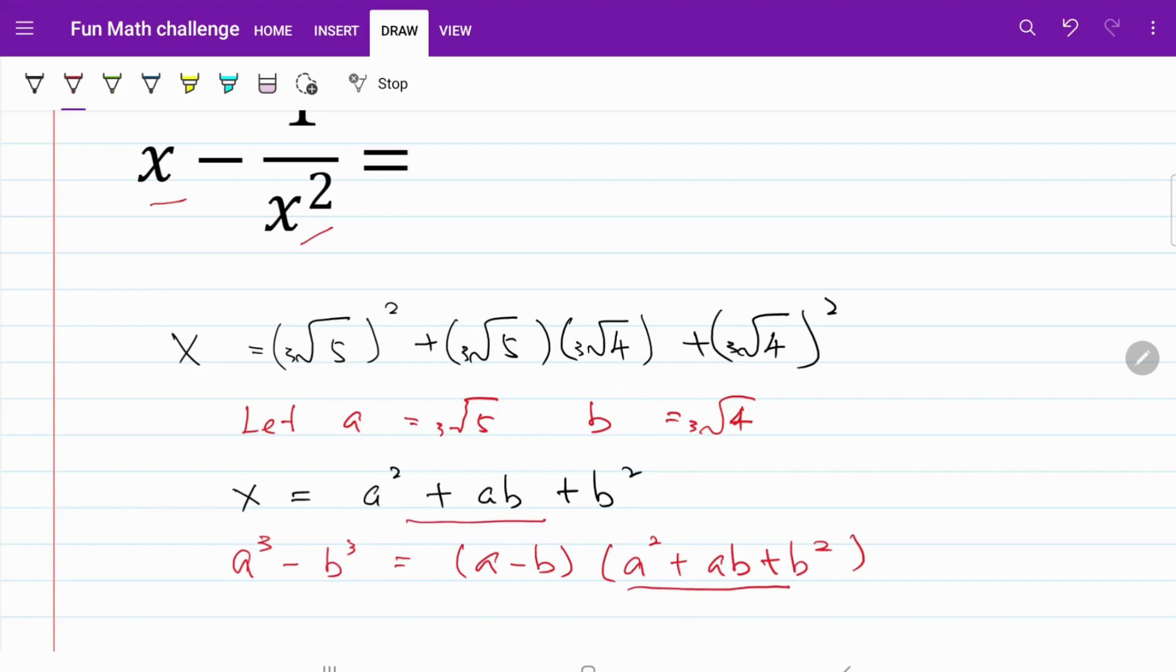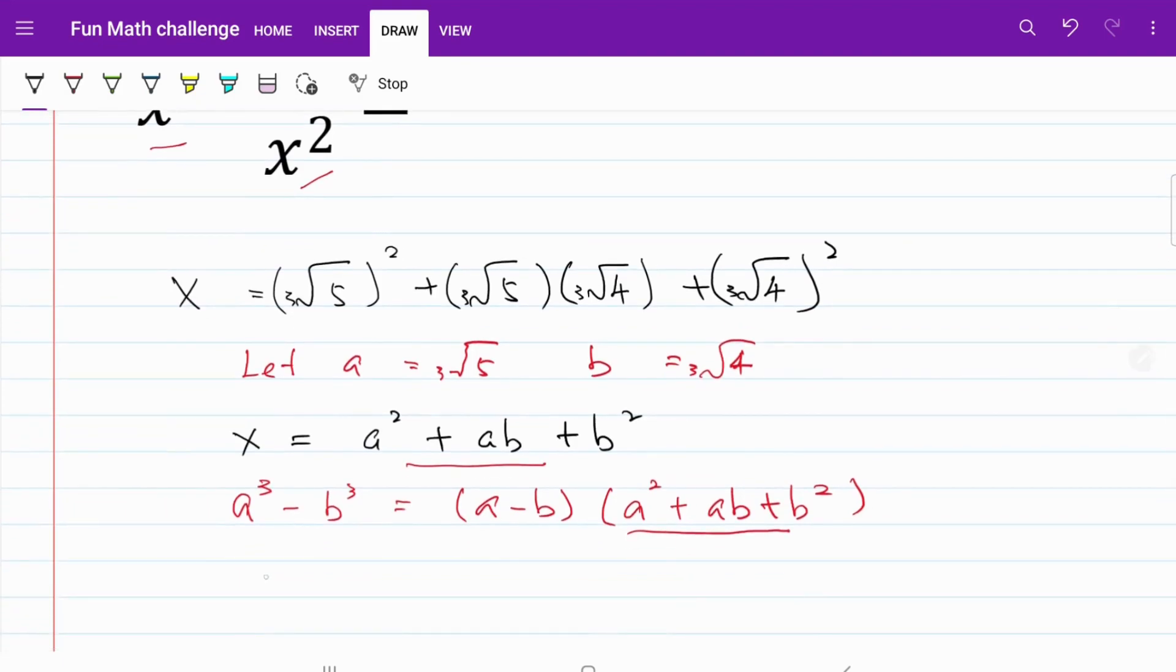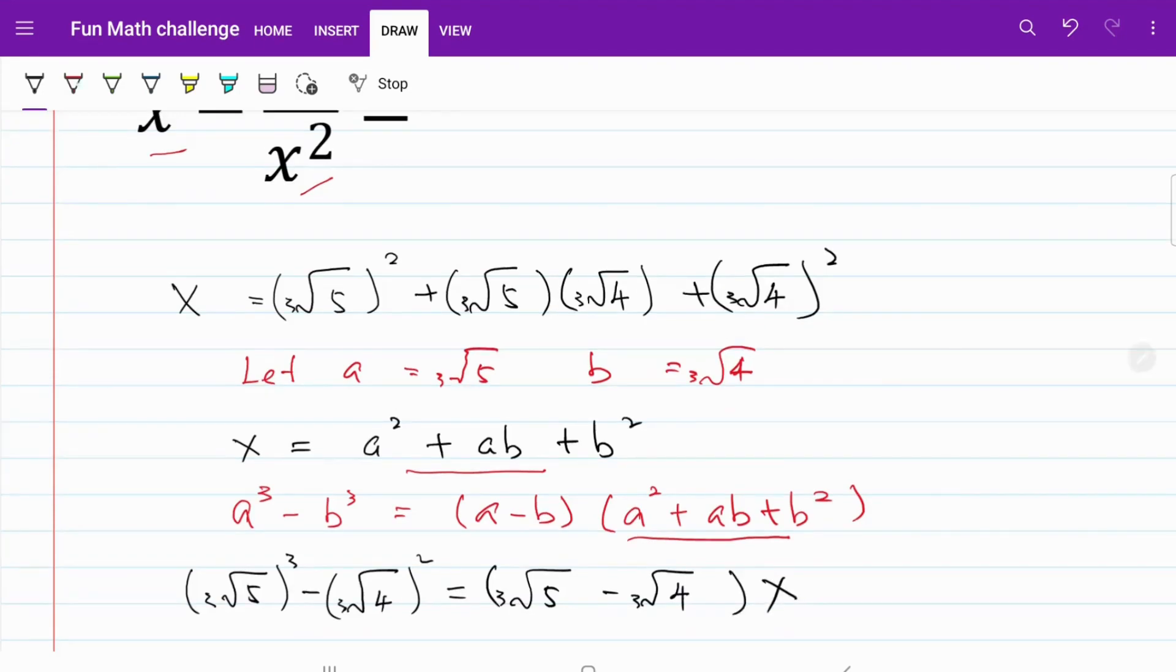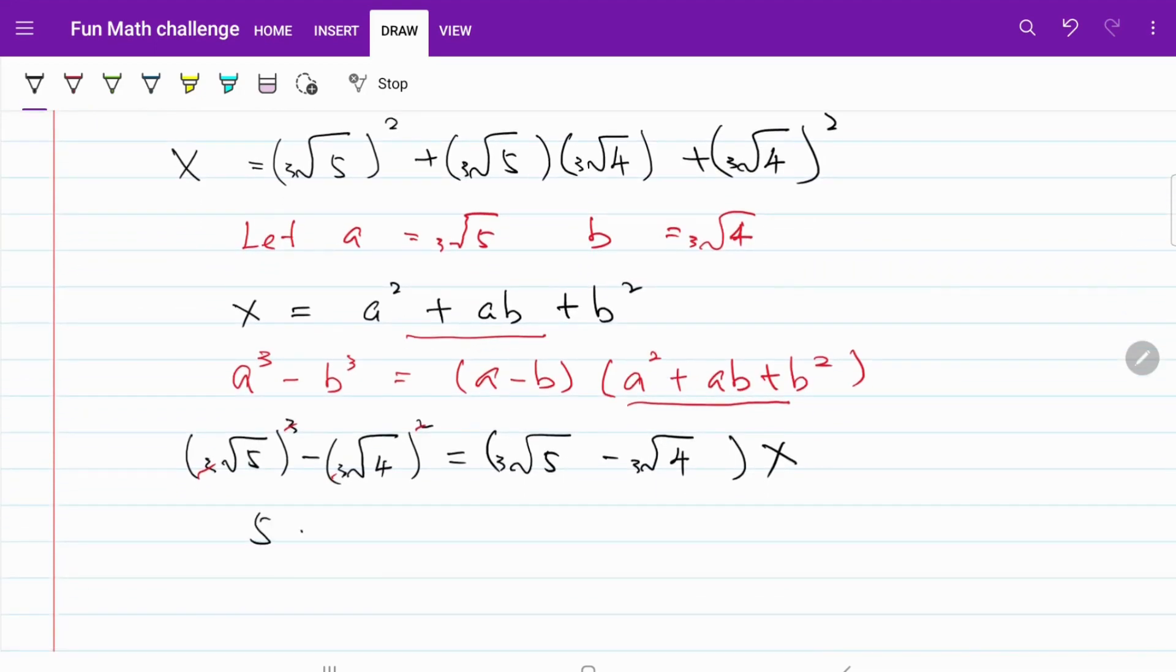Let's do our substitution. I have a cubed minus b cubed is equivalent to cube root of 5 cubed minus cube root of 4 cubed, and that's equivalent to cube root of 5 minus cube root of 4 multiplied by x. Cube root and cube cancel each other, so 5 minus 4 equals cube root of 5 minus cube root of 4 multiplied by x. In other words, x is equal to 1 over cube root of 5 minus cube root of 4.